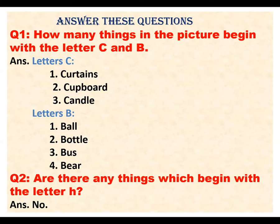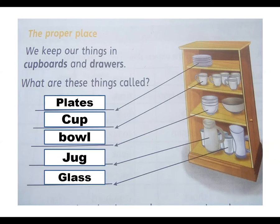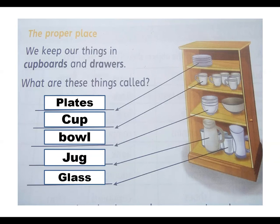Now move on to the next slide — the proper place. We keep our things in cupboards and drawers. What are these things called? Plate, cup, bowl, jug, glass — kept in a cupboard.